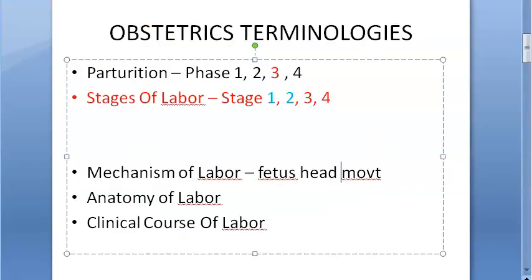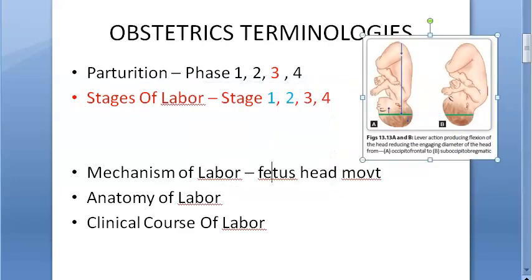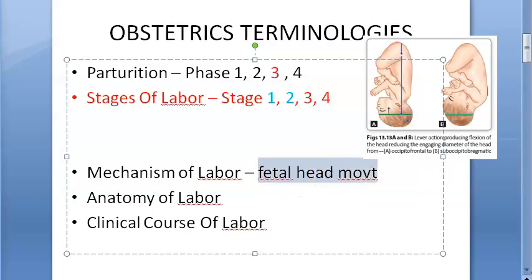Mechanism of labor is nothing but the fetal head movement within the pelvis. The series of movements that occur on the head of the fetus in the process of adaptation during its journey through the maternal pelvis is called the mechanism of labor.